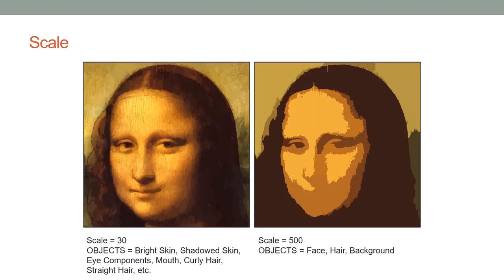Here is a case where multi-resolution segmentation was applied to the Mona Lisa image. With a scale parameter of 30, which is relatively smaller, image objects end up being the bright skin, shadowed skin, eye components, mouth, curly hair, straight hair, and so on. With a scale parameter of 500, the image objects are much larger, averaging over spectral and spatial homogeneities. The larger the scale parameter in eCognition multi-resolution segmentation, the larger the objects — it just depends on what you are looking for.